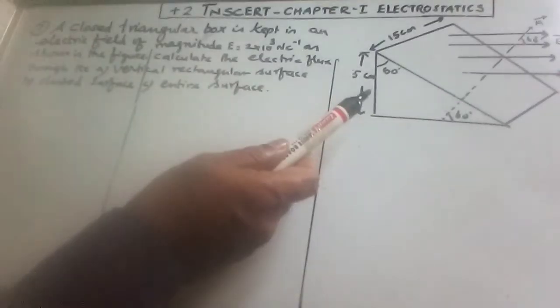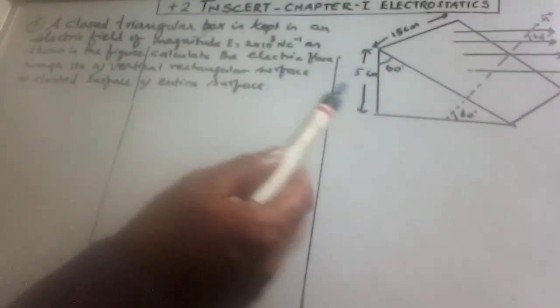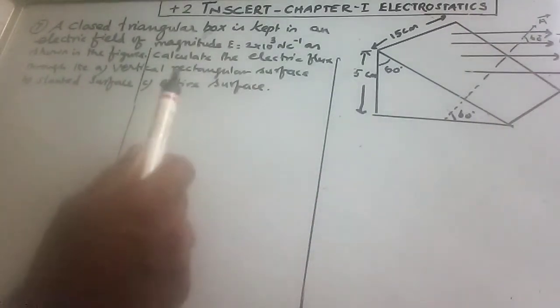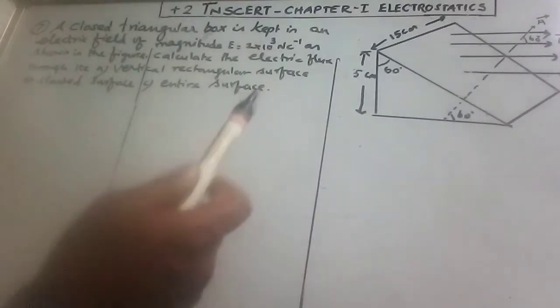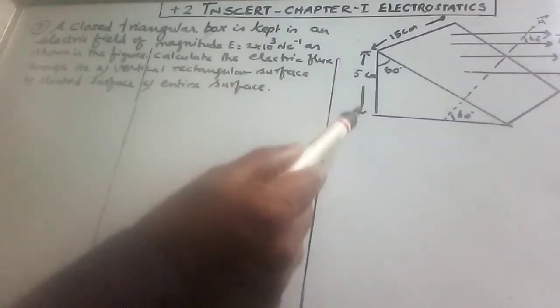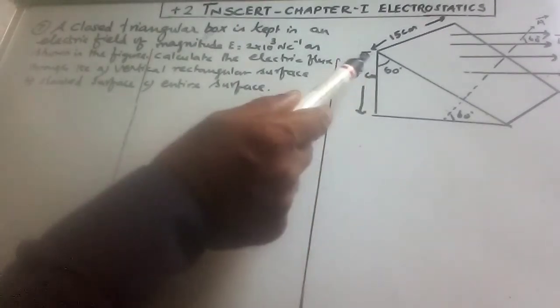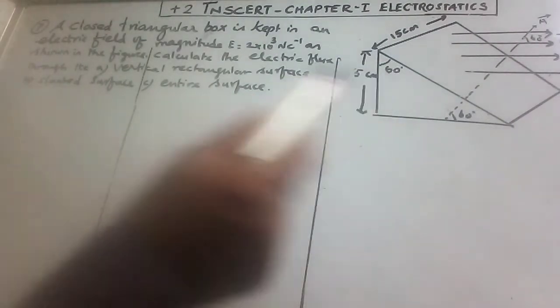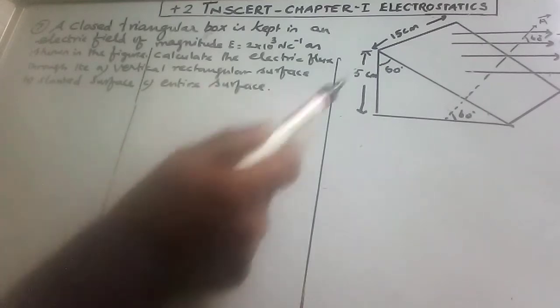The closed triangular box is kept in an electric field of magnitude equal to 2 into 10 power 3 Newton per coulomb. Calculate the electric flux through the vertical rectangular surface, the slanted surface, and the entire surface. First we have to see the vertical rectangular surface.